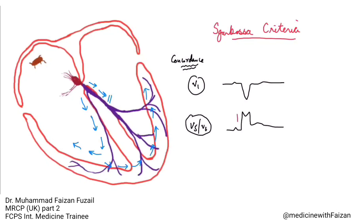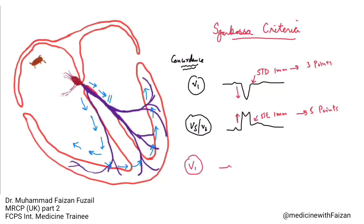The Sgarbossa criteria states that if there is concordant ST elevation of greater than or equal to 1 mm in V5 or V6, we give it five points. If there is concordant ST depression of 1 mm in V1 or V2, we give it three points. And lastly, if there is discordant ST elevation of greater than 5 mm in leads like V1 or V2, we give it two points. The higher the points, the more likely it is that the patient with LBBB pattern is suffering from MI.